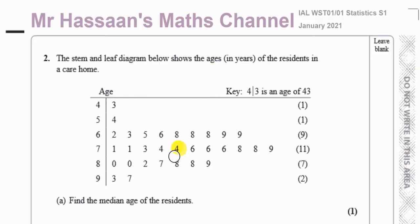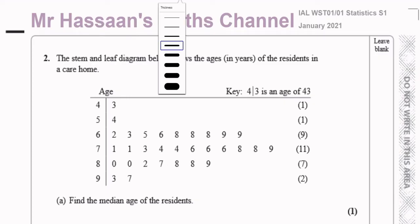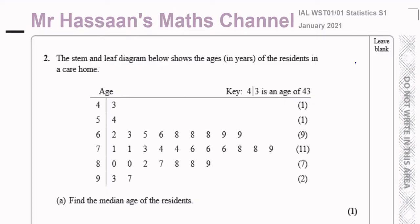We have to find the median age of the residents. First we need to determine whether the numbers are arranged in order of size, and it looks like they have. The numbers are in order: two, three, five, six, eight — yes, everything's in order.